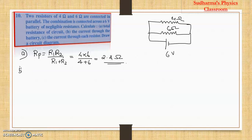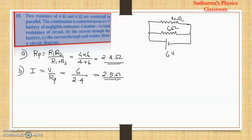Now, the current through the battery — that means the total current in the circuit — I = V / R_parallel, because here we have only one type of connection, which is parallel. V = 6 and R_parallel = 2.4, so 6 / 2.4 = 2.5 amperes. When I give you the answer here, it does not mean you do not have to calculate it yourself. Pause the video, calculate it, then check. Practice is very very important.